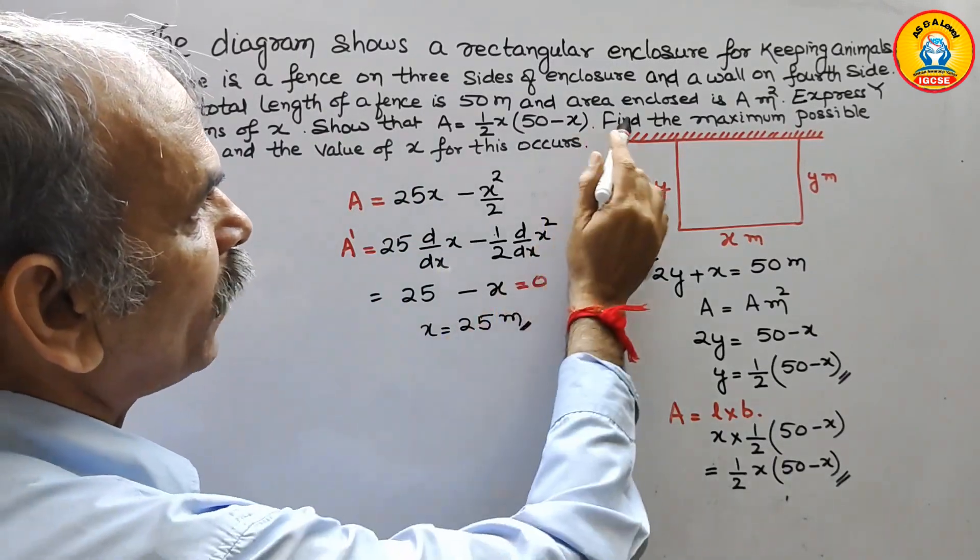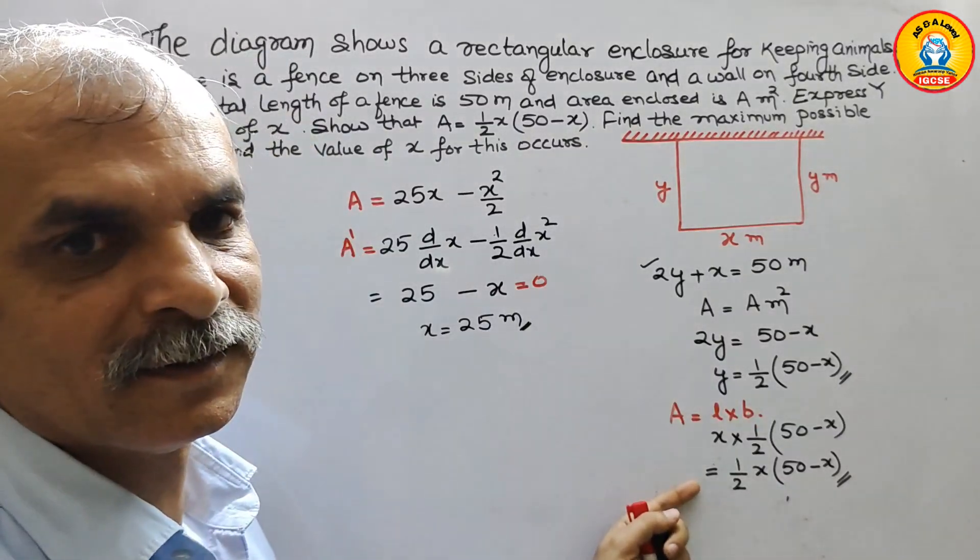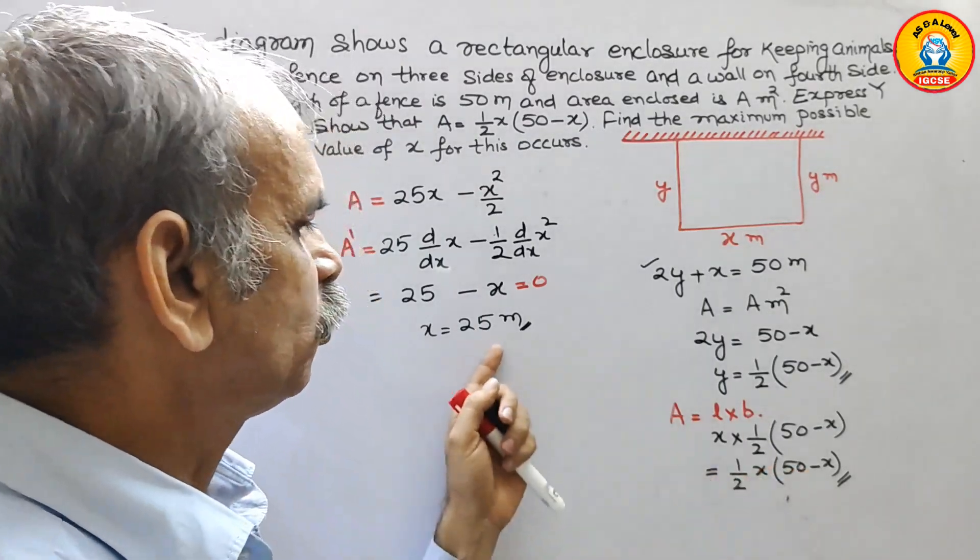And they have told find the maximum possible area. So area is this. Here we have to substitute in place of x, 25.